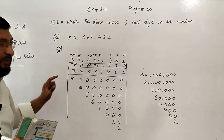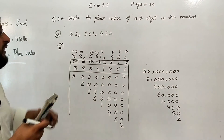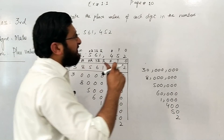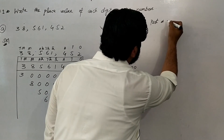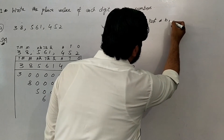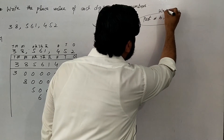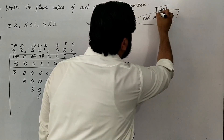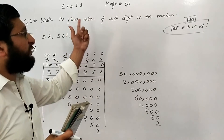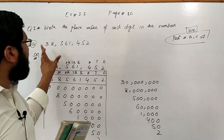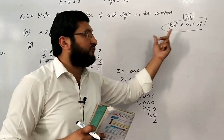Now students, that was question number one, part A. The remaining parts — B, C, and D — you should attempt yourself. Go to page number 10, exercise 1.1, question number 1, and complete parts B, C, and D on your own. OK, thank you.